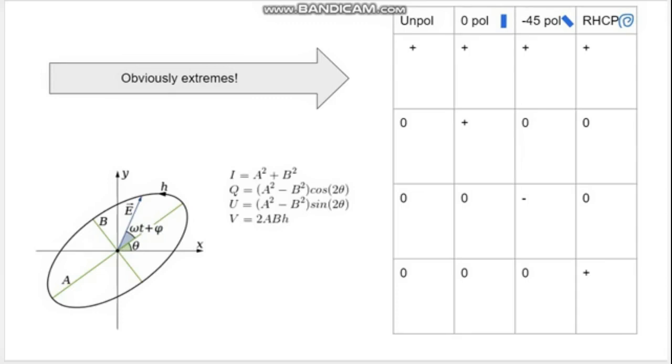You can take what you measure in i, q, u, and v and describe them in terms of a, b, h, and theta as seen in the equation to the right. From this, you can understand what the overall elliptical polarization ellipse is.